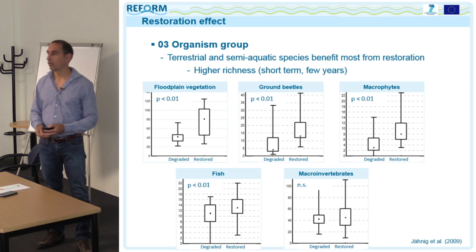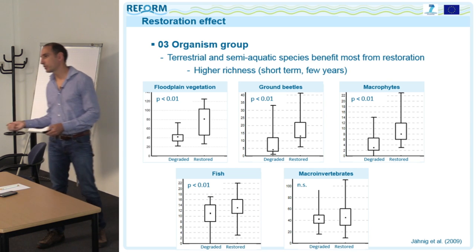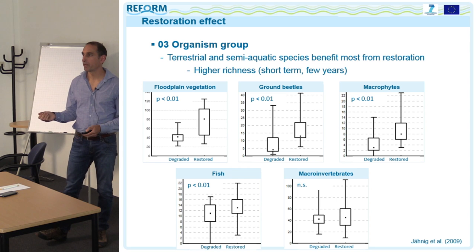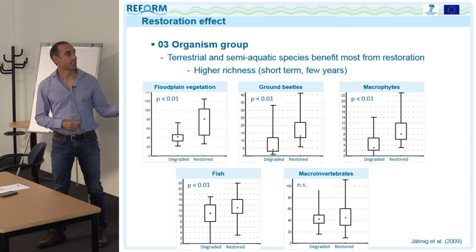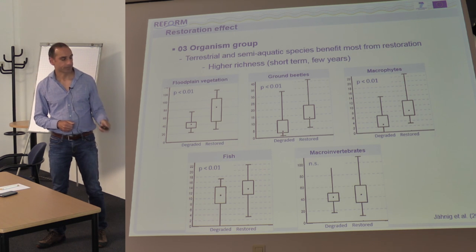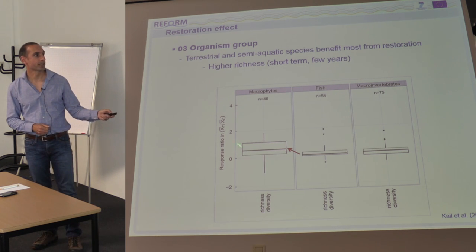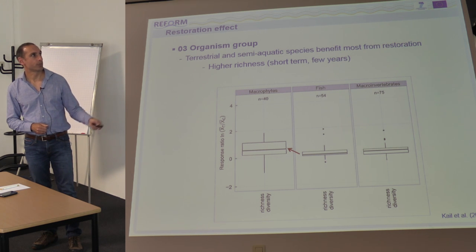Regarding organism groups, terrestrial and semi-aquatic organism groups particularly benefit from restoration. Janik found a positive effect on floodplain vegetation, ground beetles, and macrophytes, a smaller but still significant effect on fish, but no effect on invertebrates. Our meta-analysis also found a higher effect on macrophyte richness and diversity compared to fish and invertebrates.